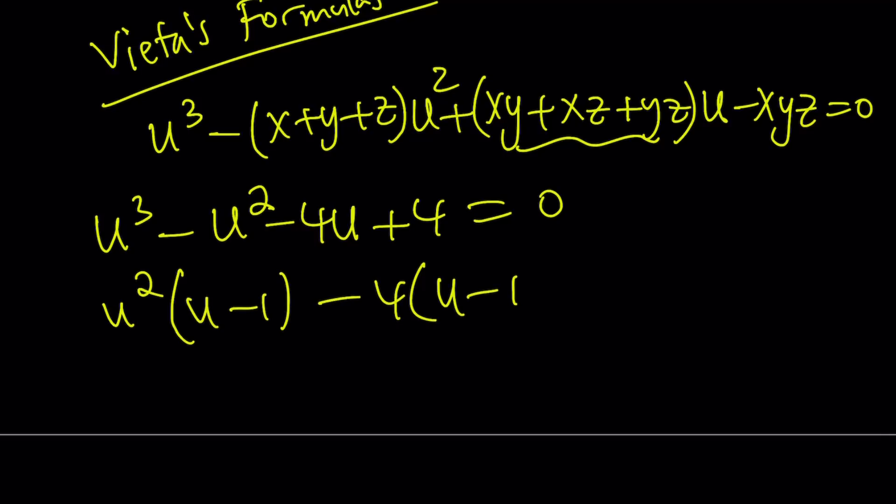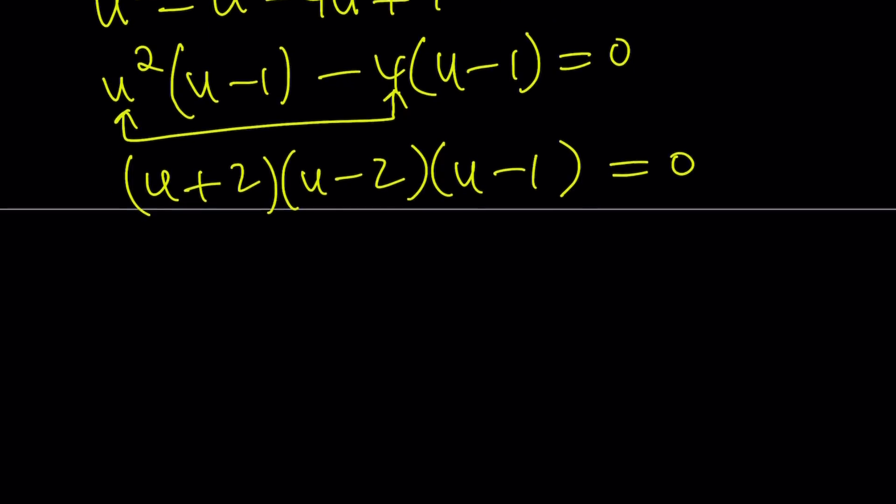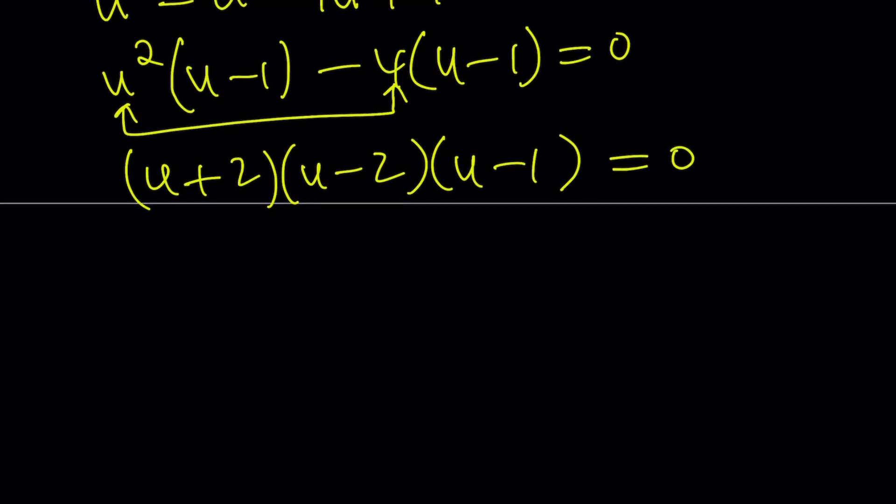And then from here, we can find the values of u. So this gives us u squared minus four. But that's factorable by difference of two squares. So we can write the whole thing as a product of three linear polynomials. And from here, we get the three values. u equals negative two, u equals two, and u equals one.